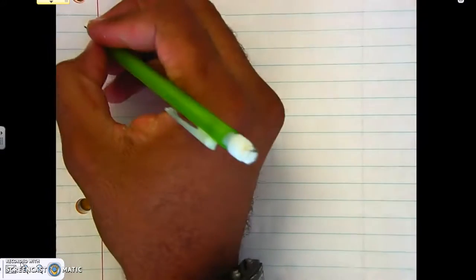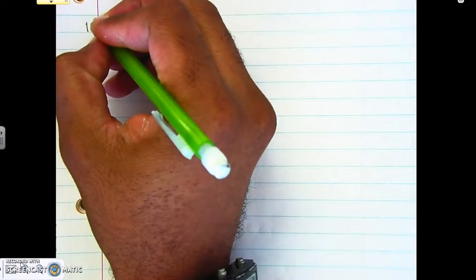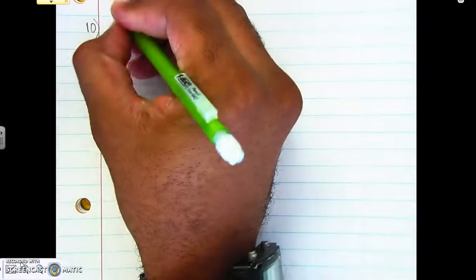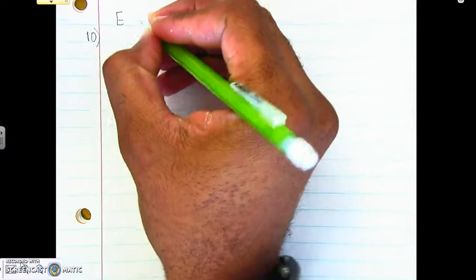Alright, so let's go ahead now and work on questions 10 through 16 on the study guide. Number 10 through 12 says to evaluate without a calculator, in other words solve it without a calculator.